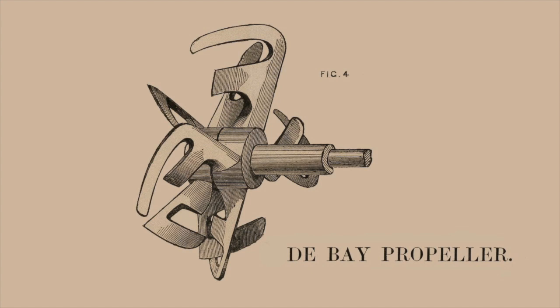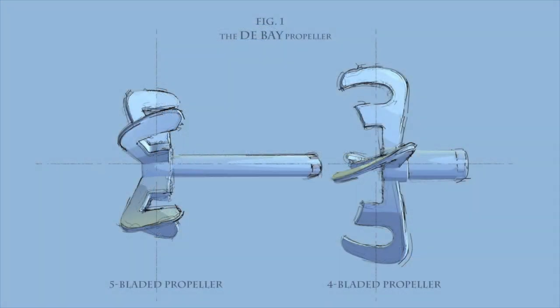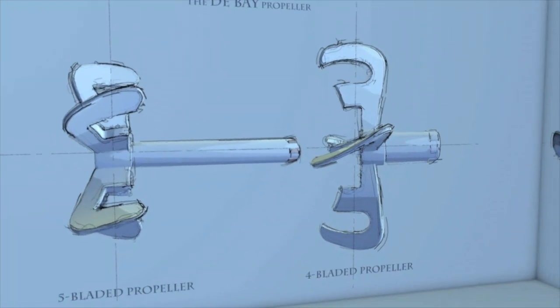The DeBay propeller was invented in 1876. It consisted of two screws, one with four and one with five blades. Portions of each blade were cut out.